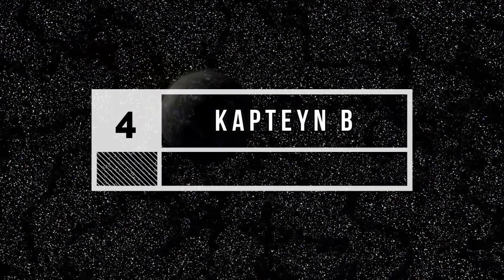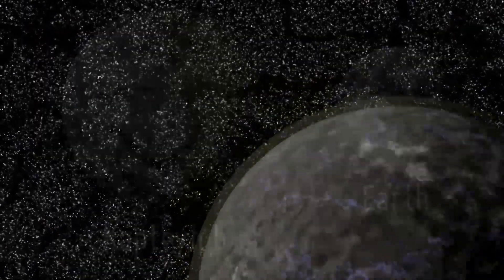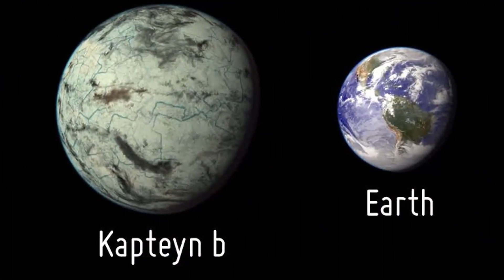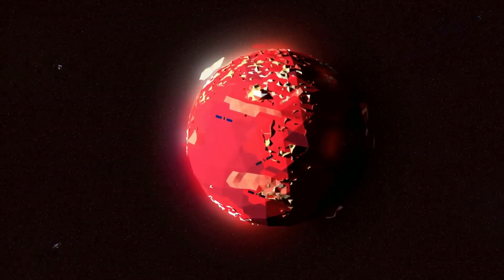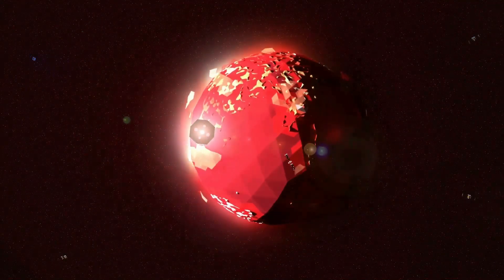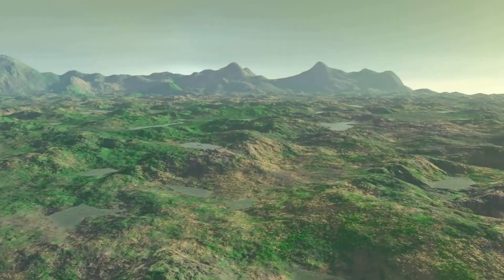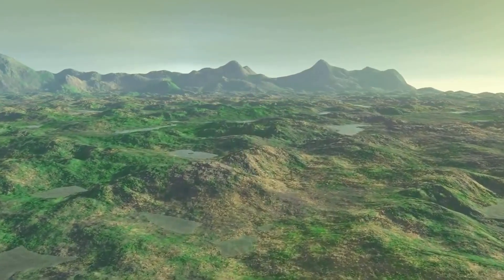Number 4: Kapteyn-B. At only 13 light years away from the Earth, it is considered pretty close to the Earth. It orbits around a red dwarf star, Kapteyn. This planet is much older than the Earth, which makes it a promising candidate for sustaining life.